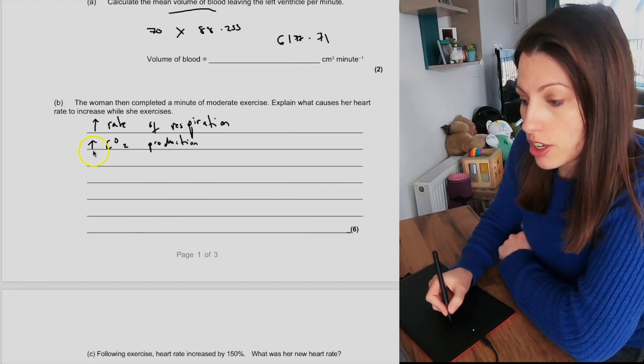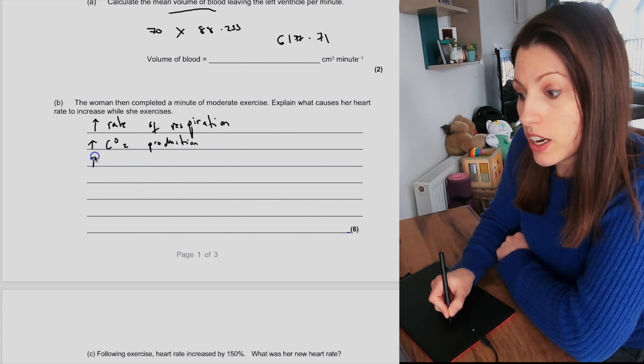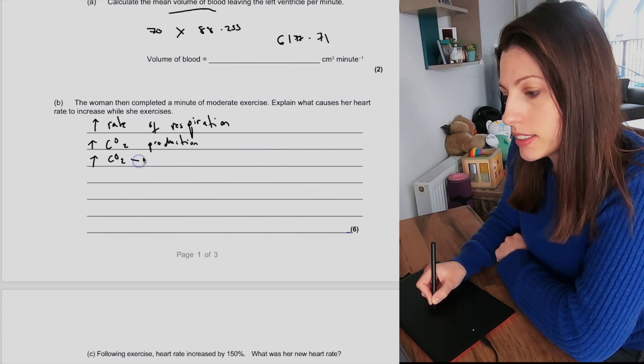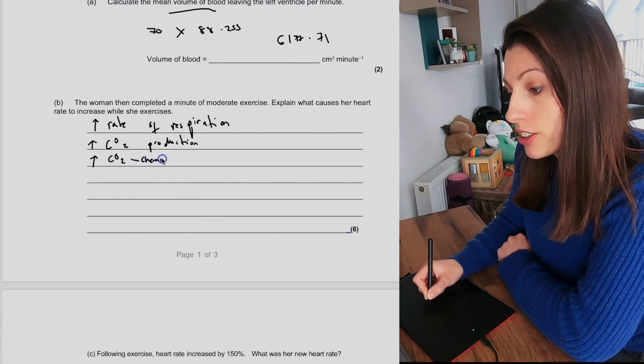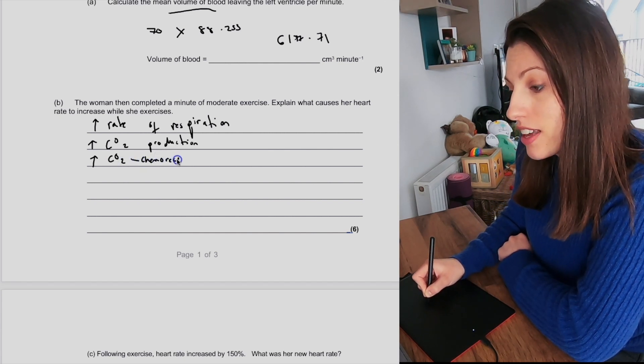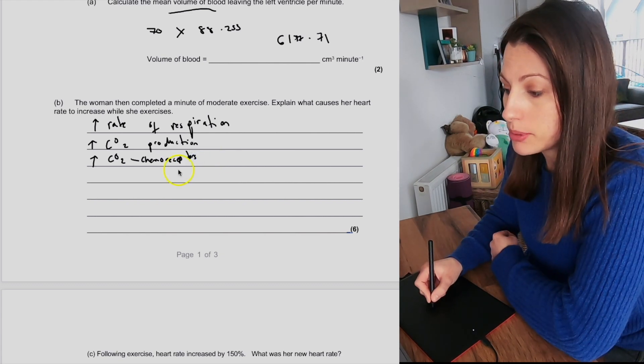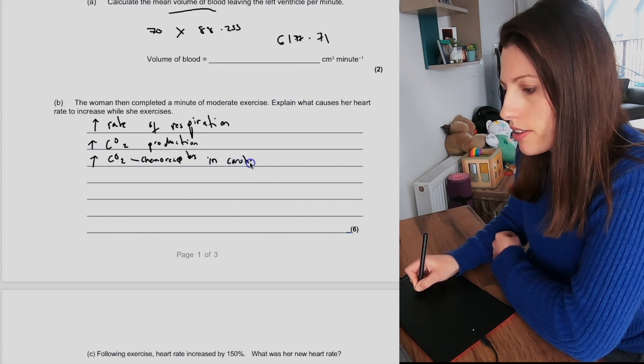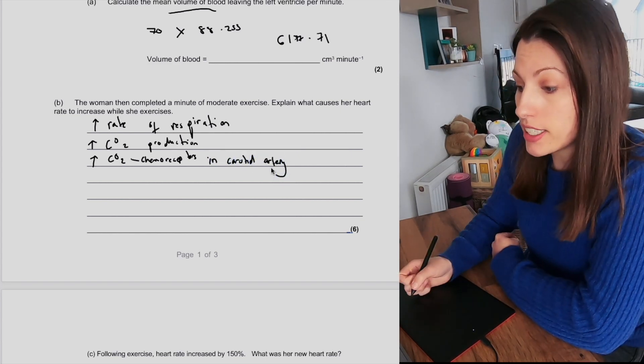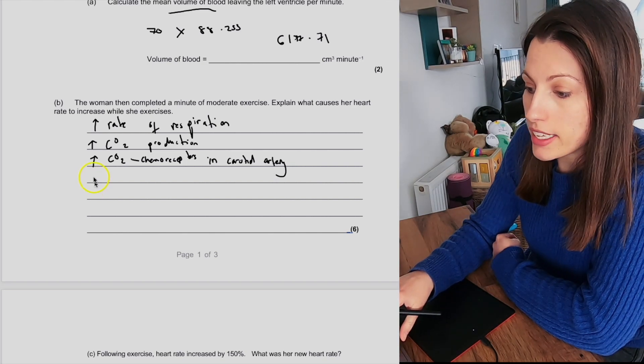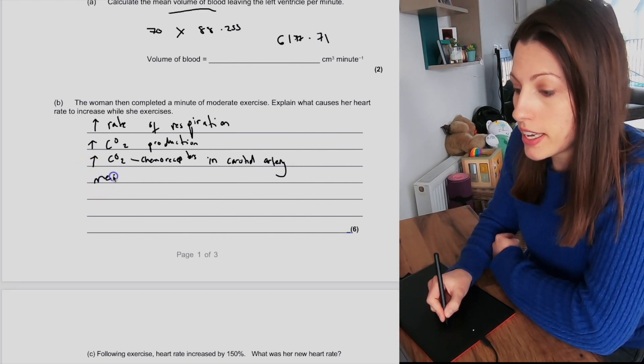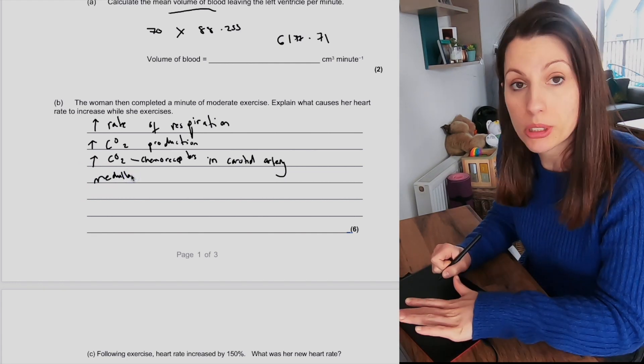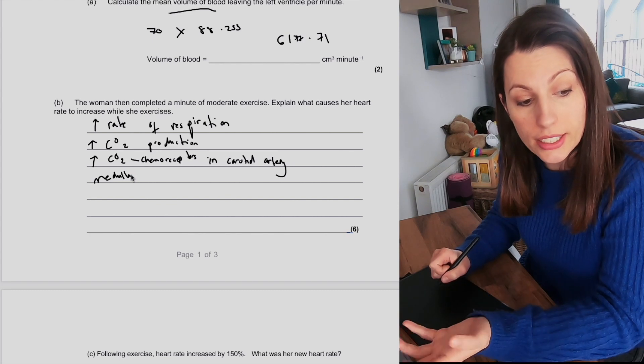This is now where we can link it to the control of the heart rate. So if there's an increase in CO2, that means the chemoreceptors are going to detect that increase, and those chemoreceptors are found in the carotid artery. So those are going to detect that increase in carbon dioxide, and they will then send impulses to the medulla. So that would be the next mark—that will cause impulses to be sent to the medulla, which is the coordination center in the brain.